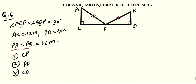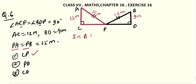In this particular diagram, we are having values: AC equals 12 meters, BD equals 9 meters, PA is 15 meters and PB is also 15 meters. So first we have to find CP. Now, CP is a part of triangle ACP, as you can see in this diagram. So you have to apply Pythagoras theorem in triangle ACP.